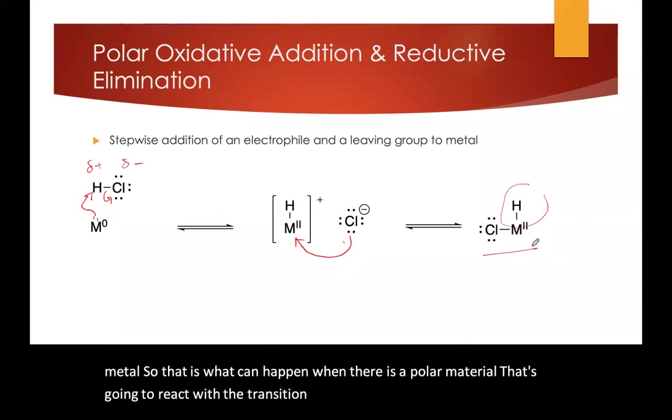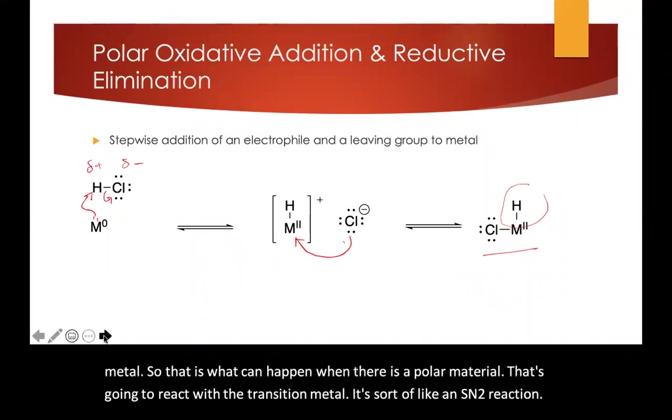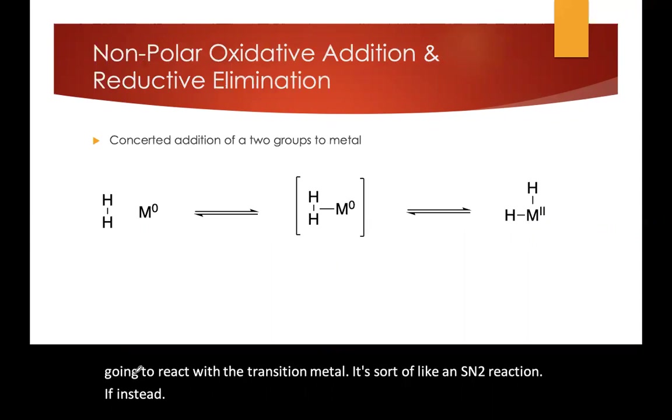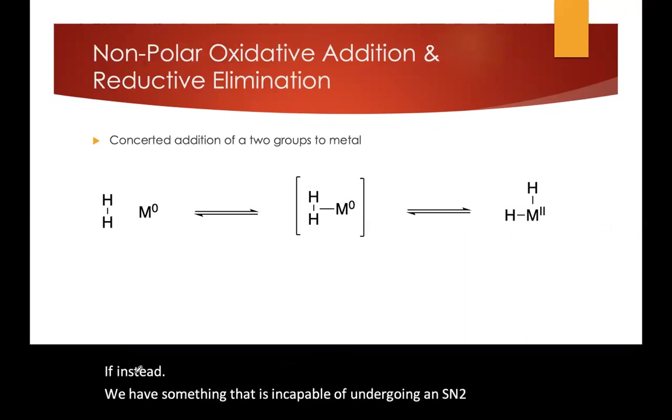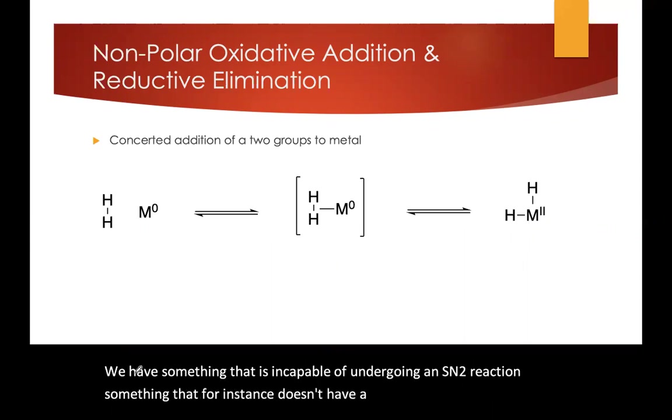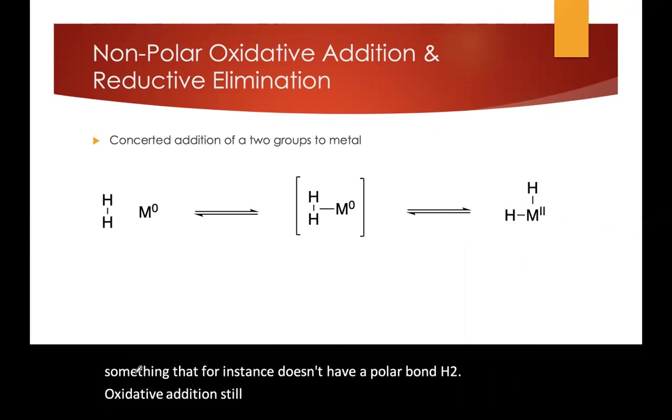It's sort of like an SN2 reaction. If instead, we have something that is incapable of undergoing an SN2 reaction, something that for instance doesn't have a polar bond like H2, oxidative addition still occurs in those cases, but it can't undergo the same kind of ionization step that we had before.